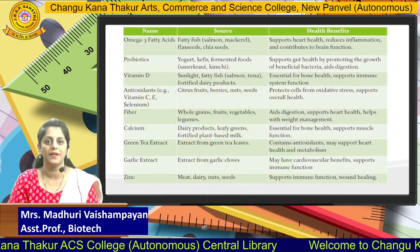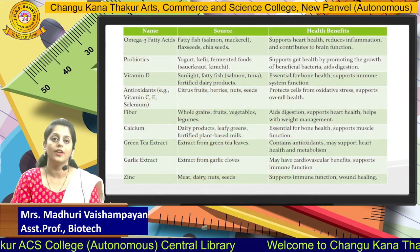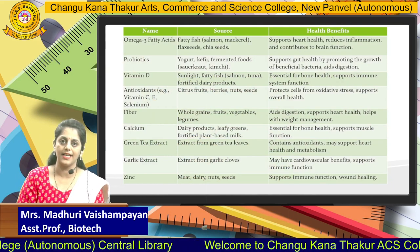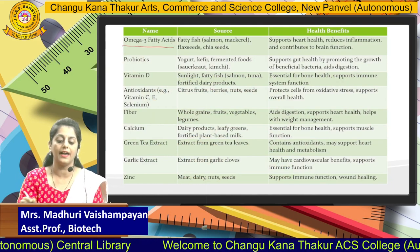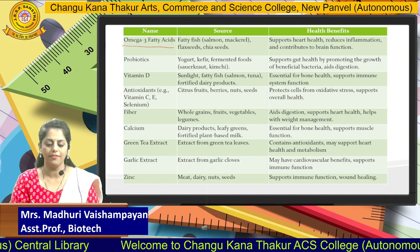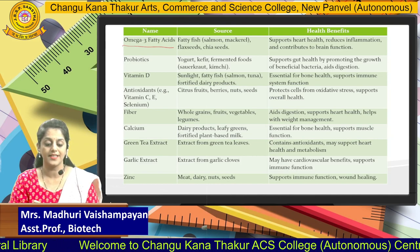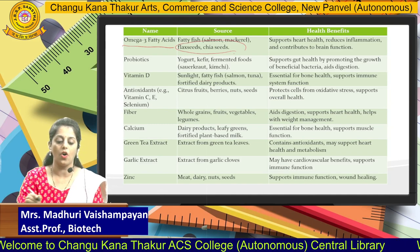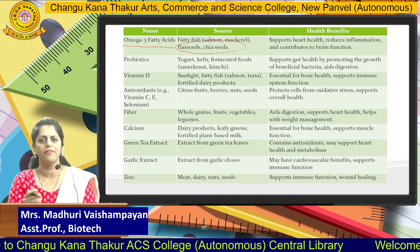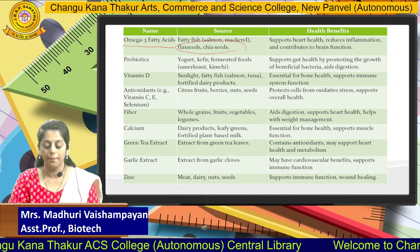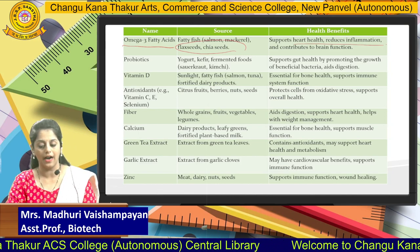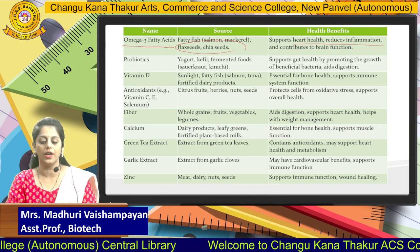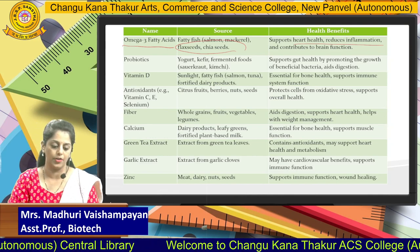These are certain examples of nutraceuticals which are commonly used. The first one is omega-3 fatty acids. You might have heard about chia seeds and flax seeds — these are common sources of omega-3 fatty acids. It is necessary to consume them because they improve your heart health, reduce inflammation, and contribute to better brain function.